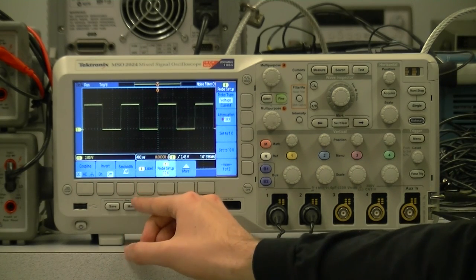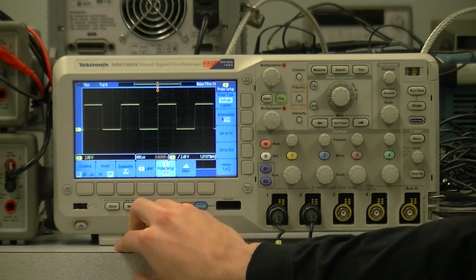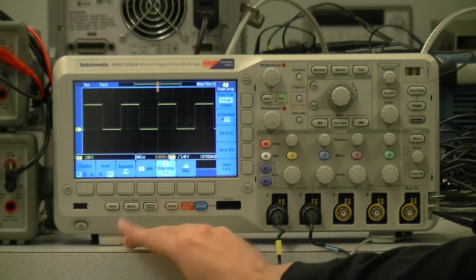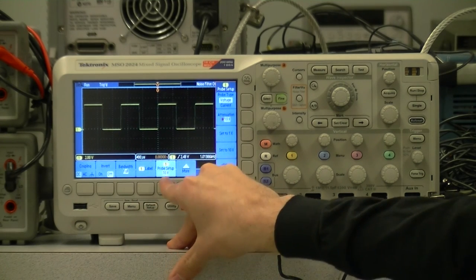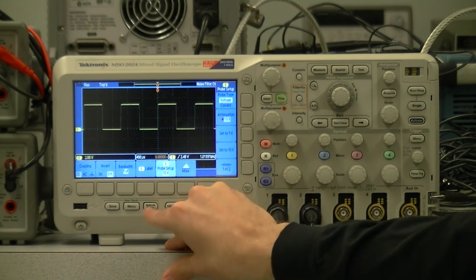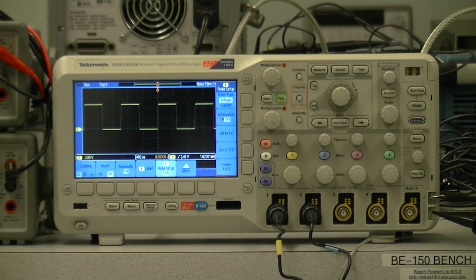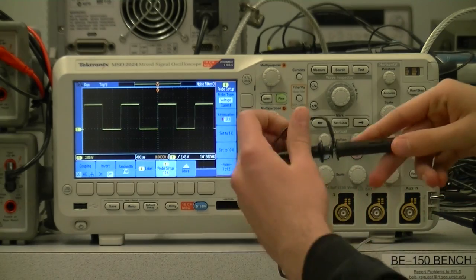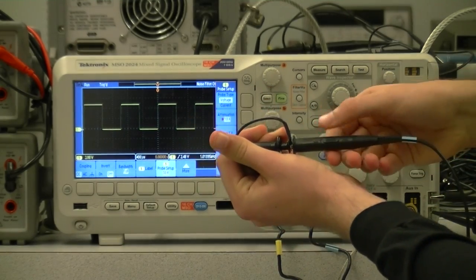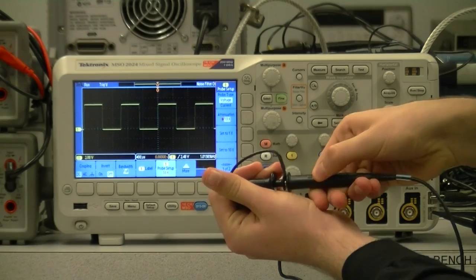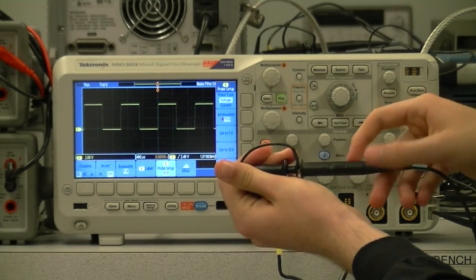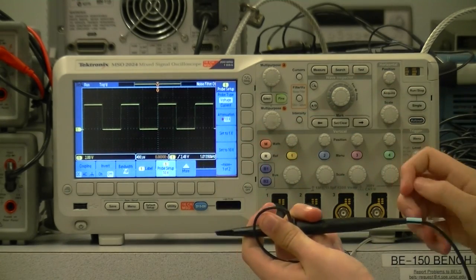The bandwidth and label options similarly aren't very important for this class. Probe setup, however, this button is very important. It currently shows 10x, and the probe itself has a little slide switch on it, which can be set between 1x and 10x. It's very important that the probe setting match the oscilloscope setting.